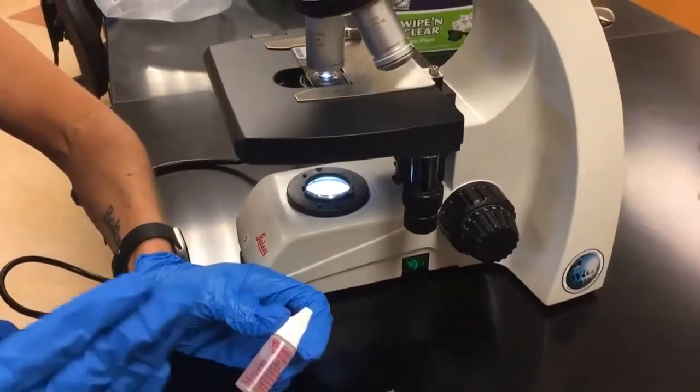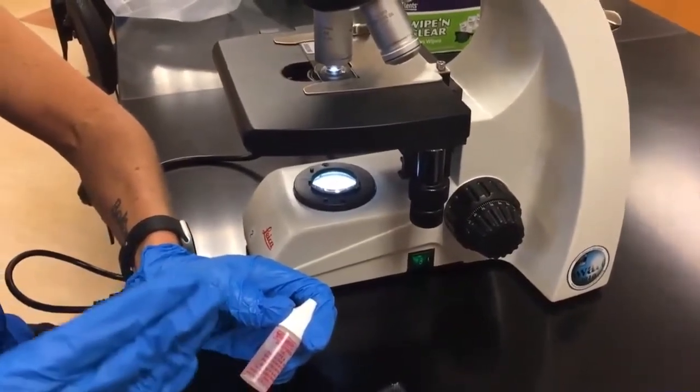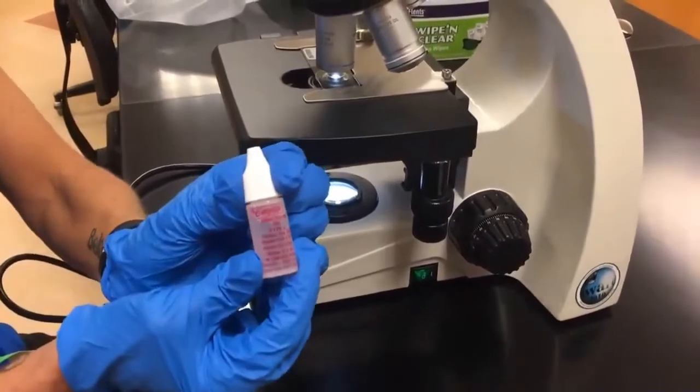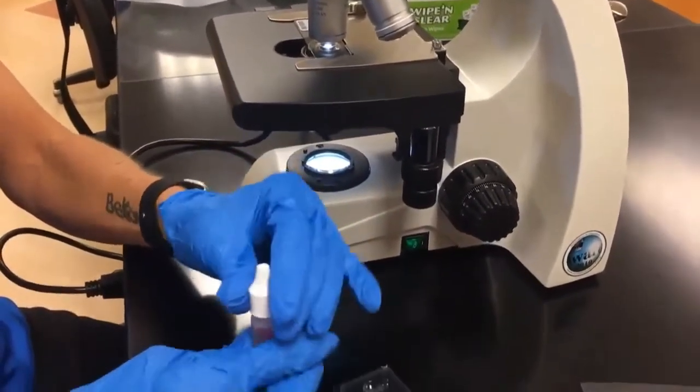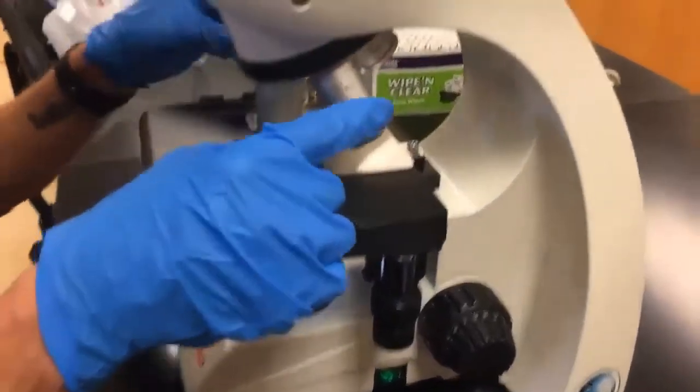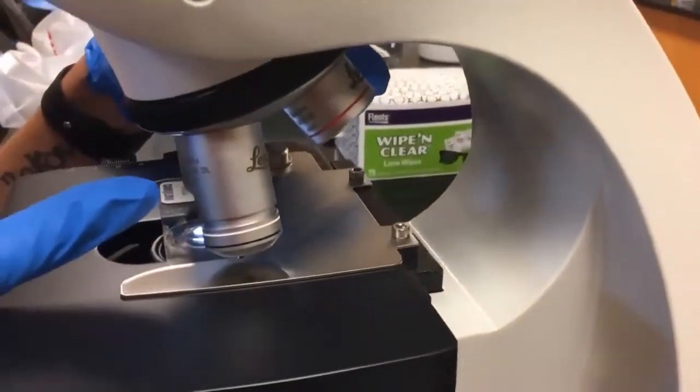Now you're ready to look at it with the oil immersion lens. To do this, you're going to need your immersion oil. So take that out of your kit, take the top off. This white lens is the oil immersion lens.